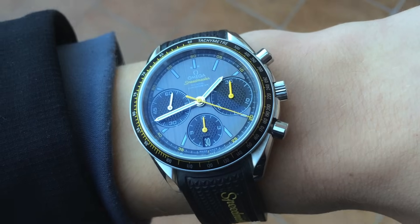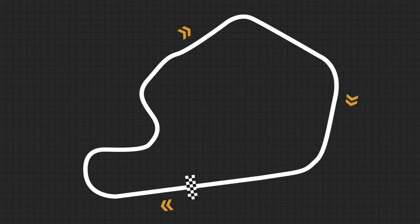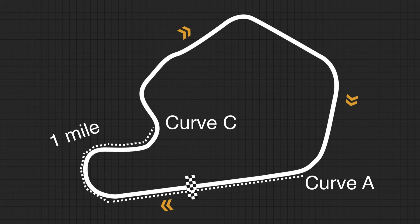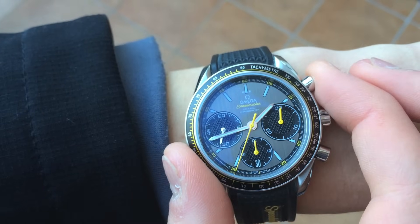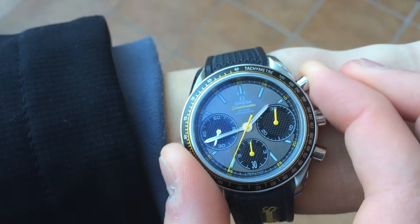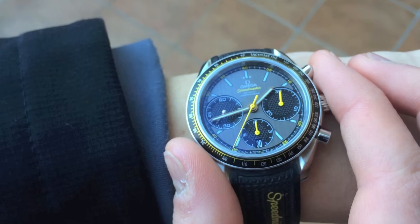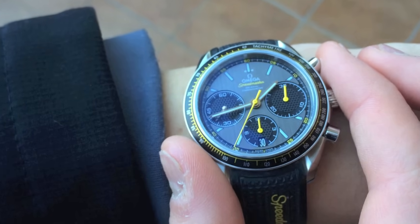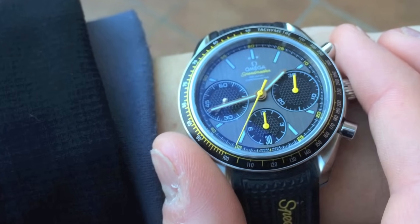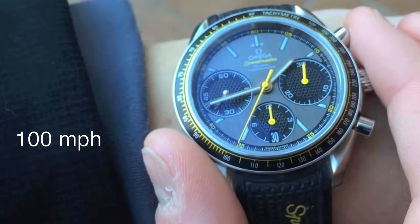Keep in mind, you can use other units of measurement. For example, the race magazine also tells you there is a distance of 1 mile between curve A and curve C. Repeating the exercise, it takes the car 35 seconds to cover this distance. The tachymeter scale now indicates slightly above 100, meaning the car's average speed was just above 100 miles per hour.